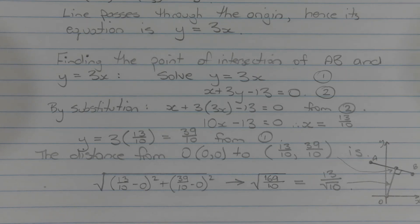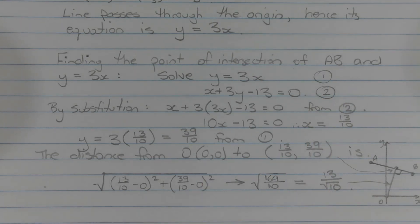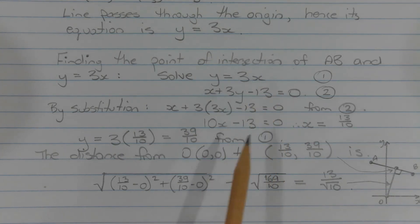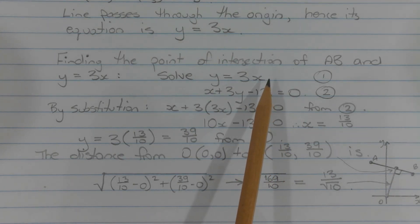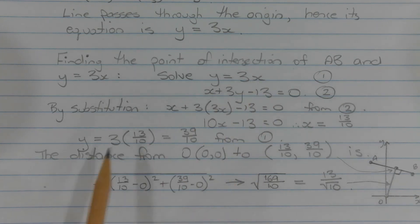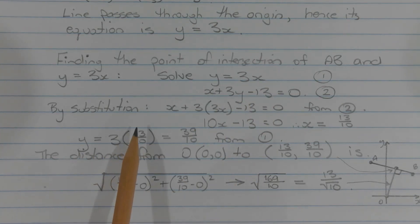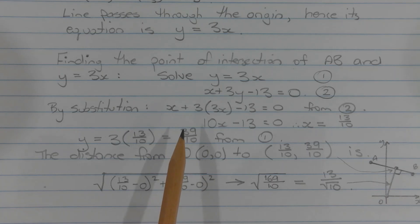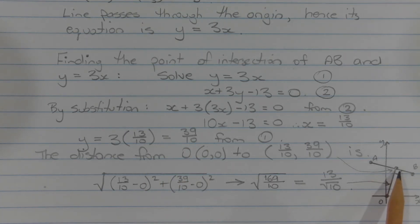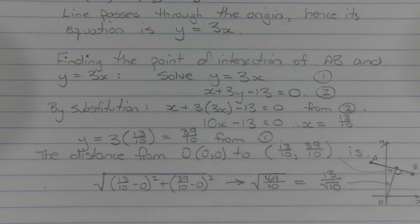To find the y-coordinate, I will use equation 1 for simplicity, substituting x equals 13 over 10. We get y equals 3 times 13 over 10, which equals 39 over 10. So the coordinates of the point of intersection of the line y equals 3x and the interval AB are (13 over 10, 39 over 10).